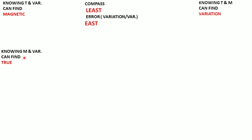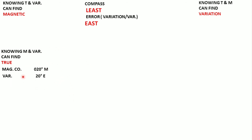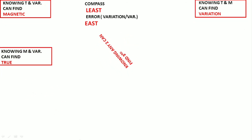Similarly, if I know magnetic and variation, I can find out true. Magnetic compass is 020, variation is 20 east. Compass least, error east — so compass has to be less, meaning true would be more. True is 040. So if you know any two of these values, you can always find out the third one.